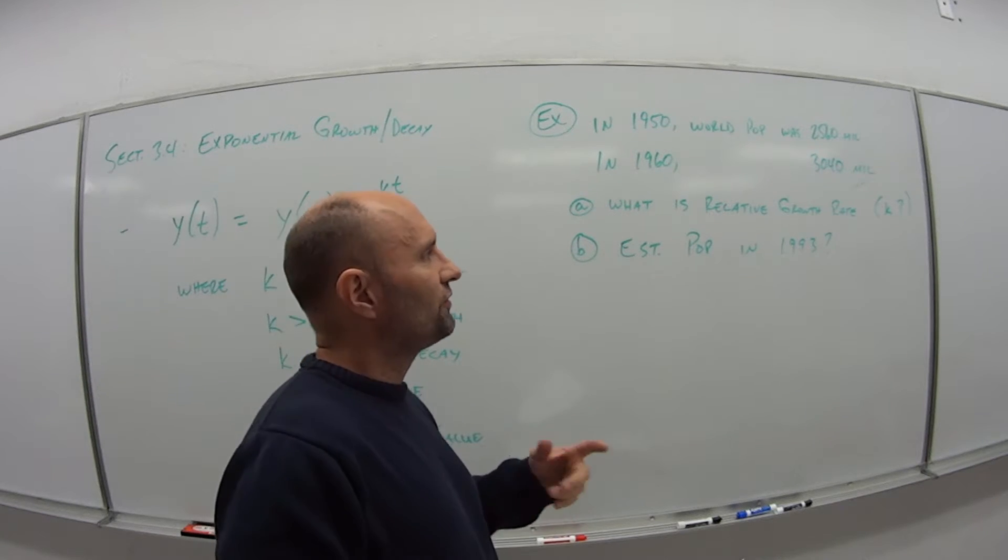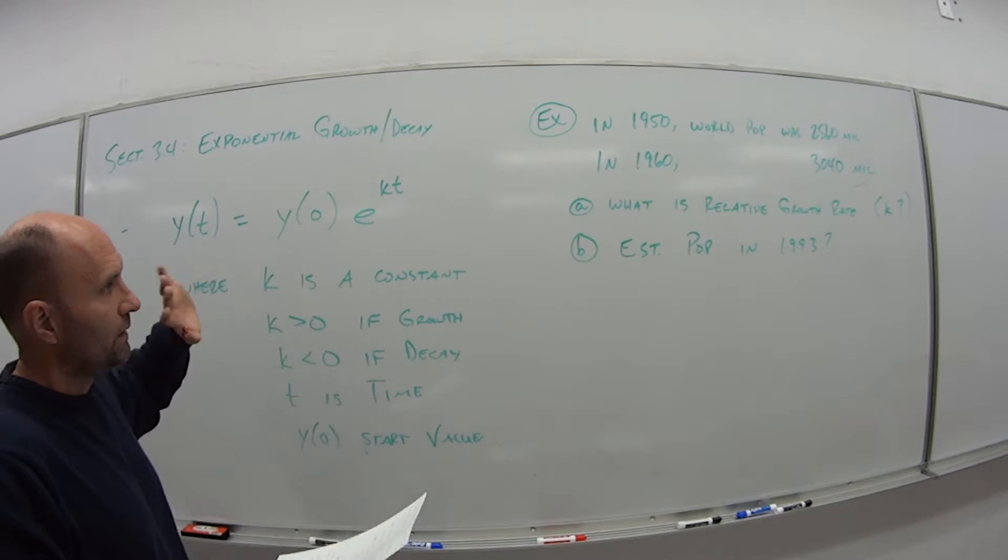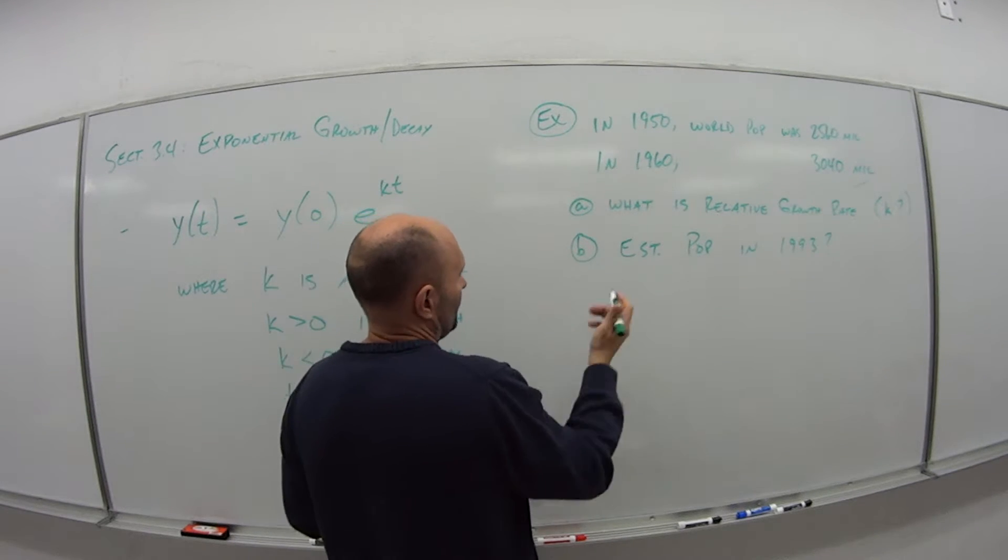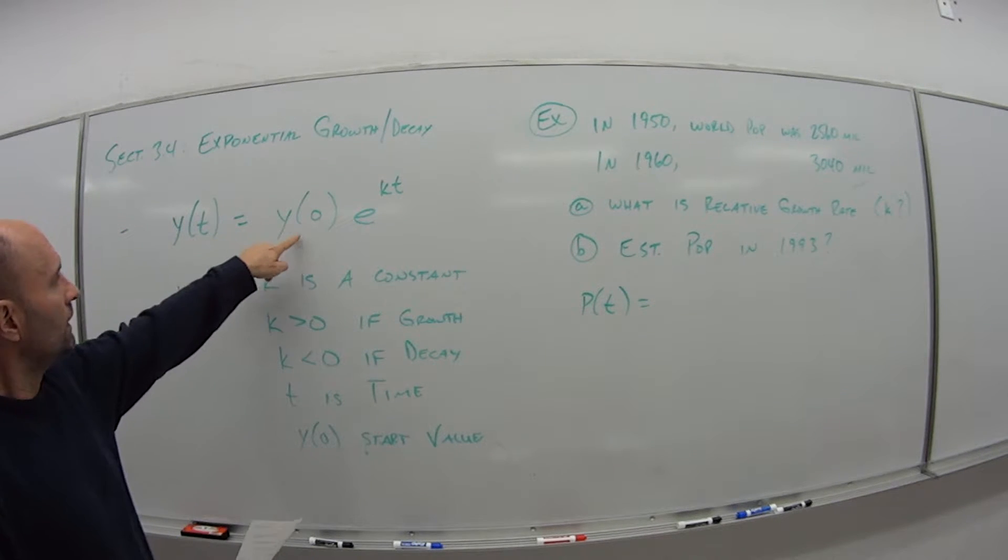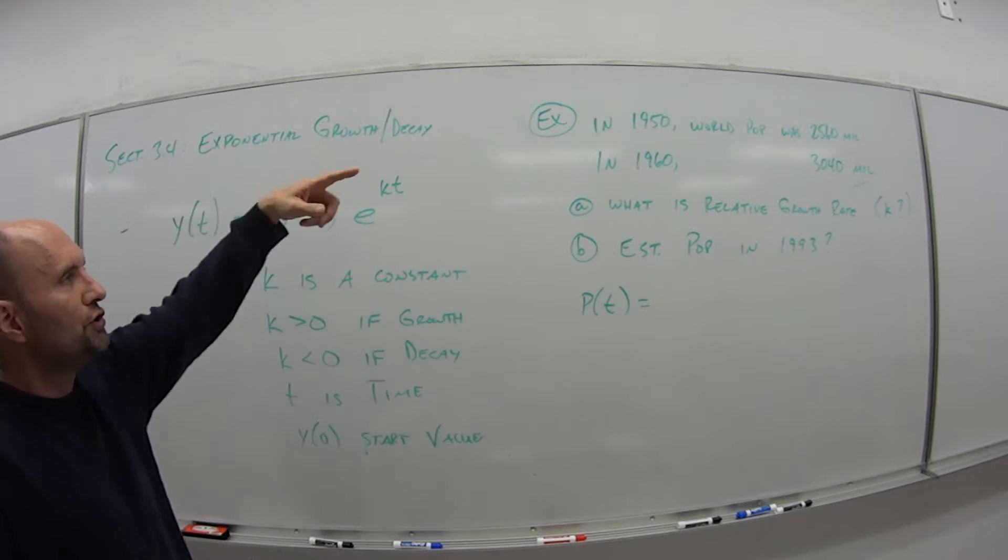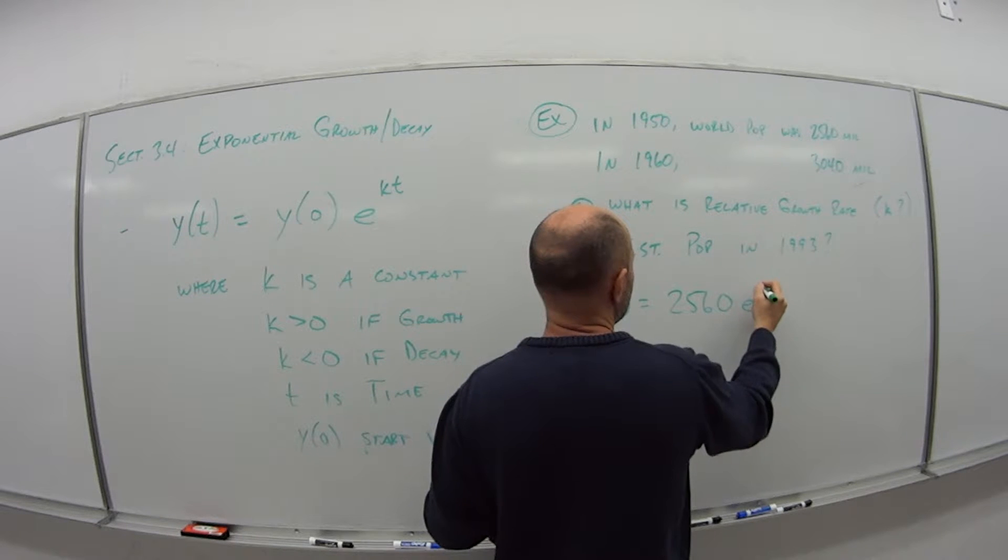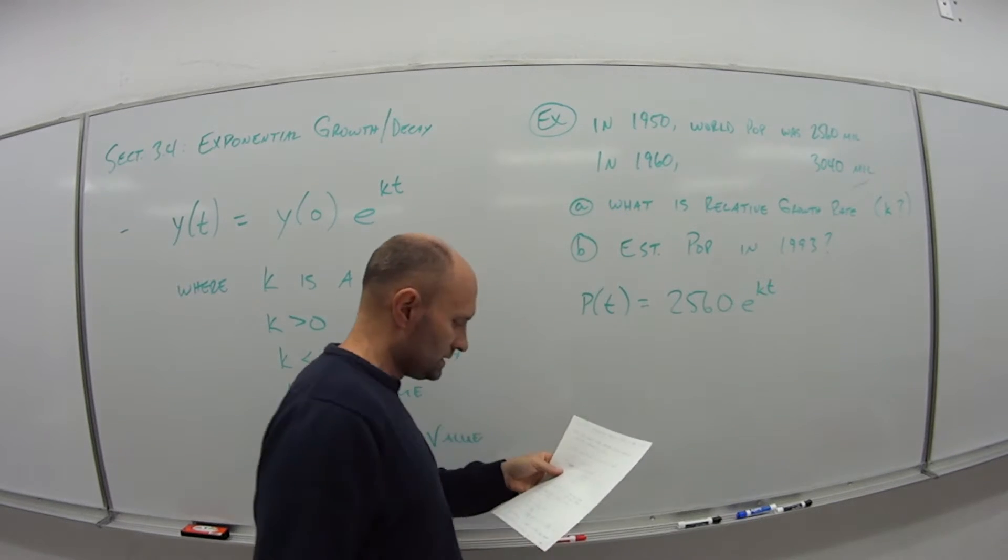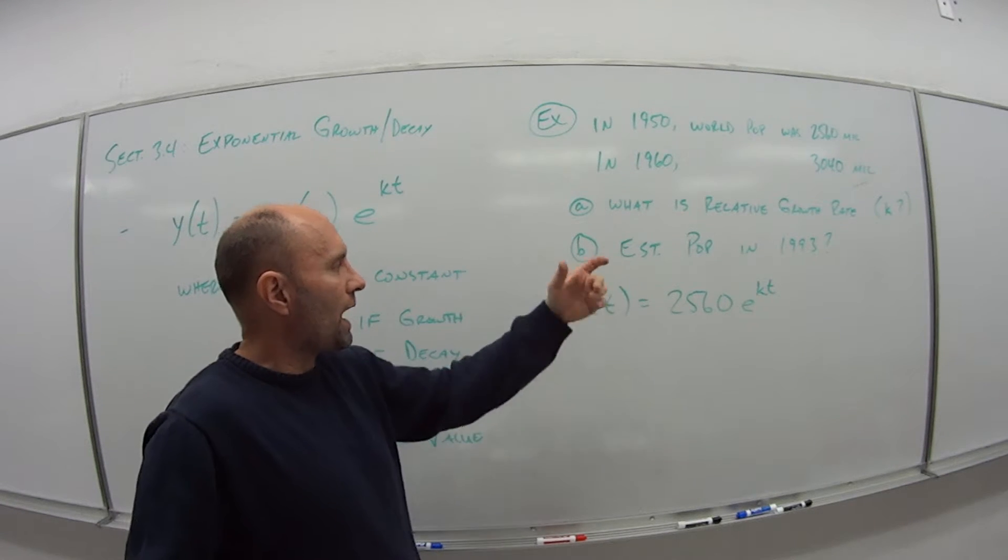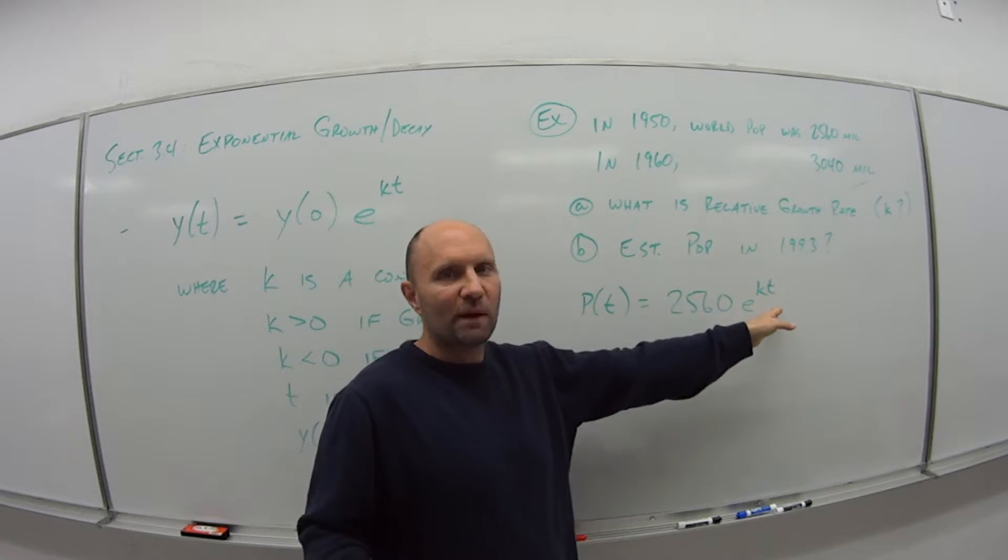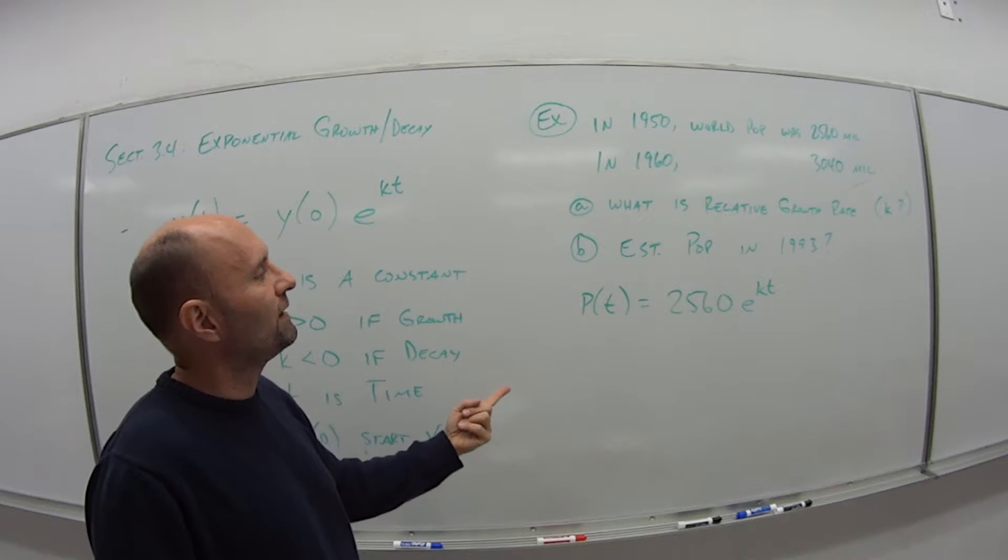So first thing we need to do is figure out k. And we can do that how? Well, our original formula. So we're going to use p because we're talking about population here. So p times t is p of 0, or the original population I was dealing with, 2560, times e to the kt power. So that's the generalized formula. So if I know how much time I'm talking about, I can plug that in for my value of t. And if I know k, I can figure out the rest. But first I need to figure out k.